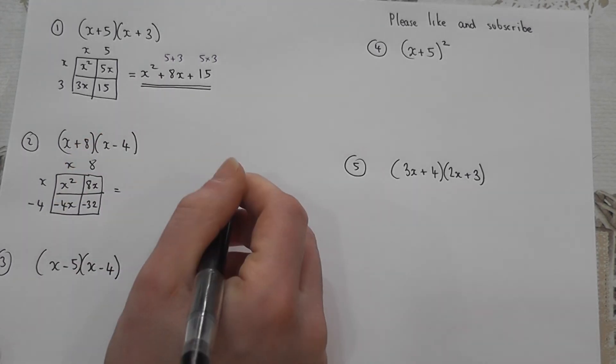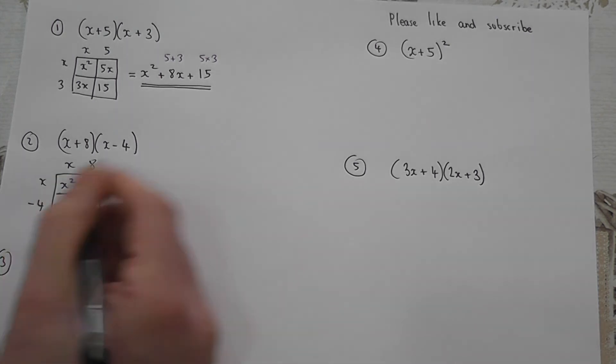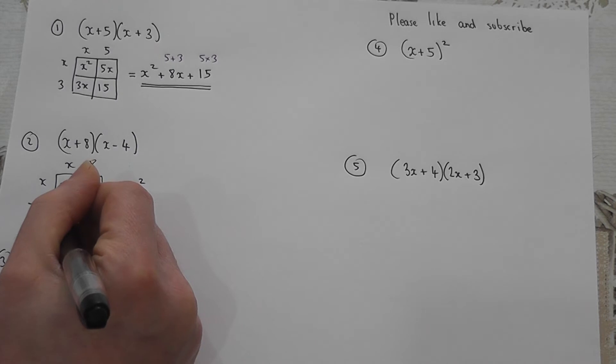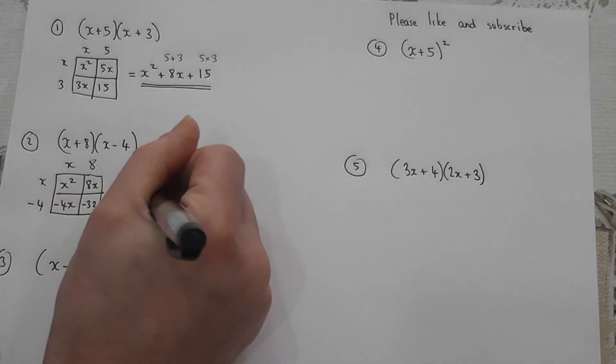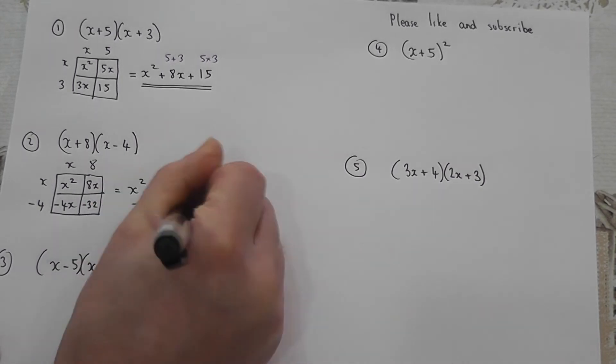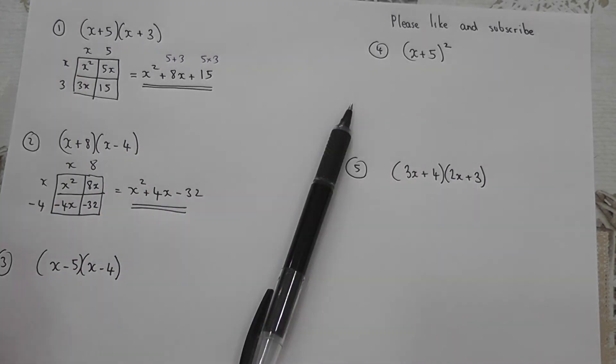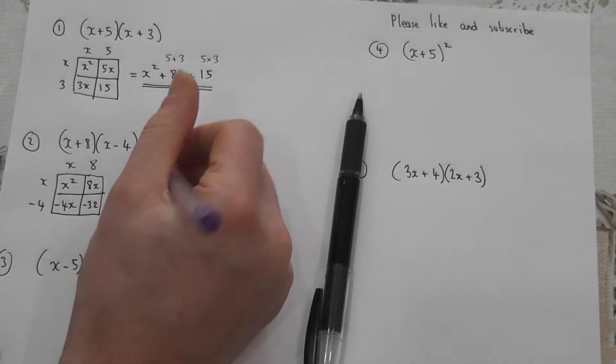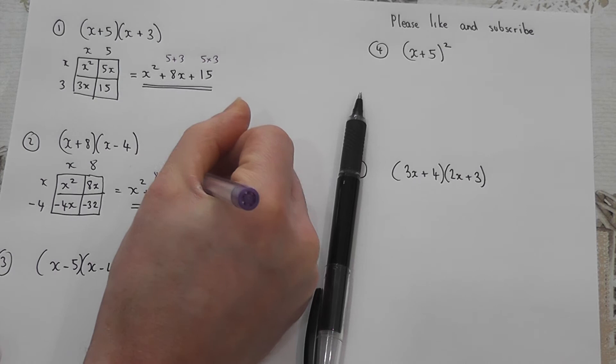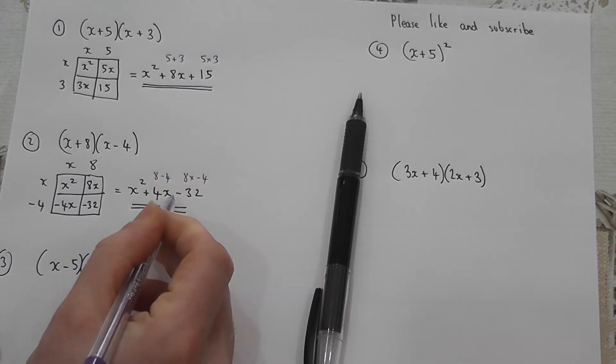Then to get the answer we simplify, we have an x squared. Now be very careful. 8 take away 4 is positive but it's positive 4x. And there's a negative 32 here. Now once again the trick works because 8 take away 4... negative 4 is negative 32.